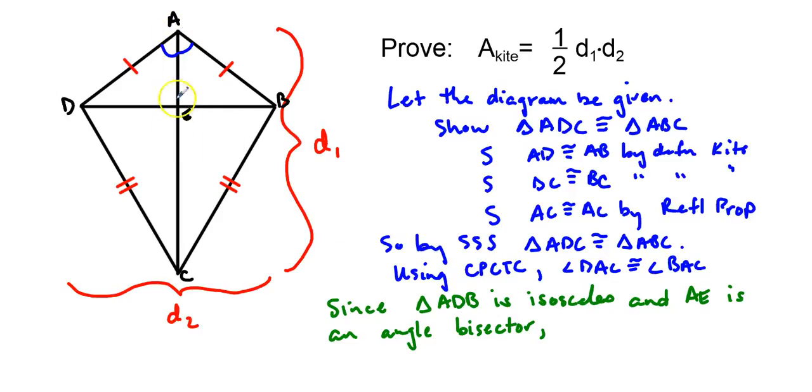Well, if AE is an angle bisector in an isosceles triangle, we know it's also the altitude. And we proved that earlier this year. And what that does for us is allow us to make these markings and show that all of these intersections are perpendicular. The intersections of the two diagonals are perpendicular.